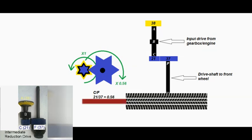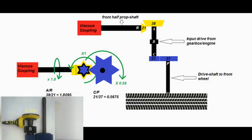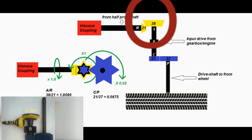The yellow gear A with 38 teeth meshes with the other yellow gear R with 21 teeth. These gears turn the drive through 90 degrees to drive the front half of the prop shaft, which is connected to the viscous coupling.